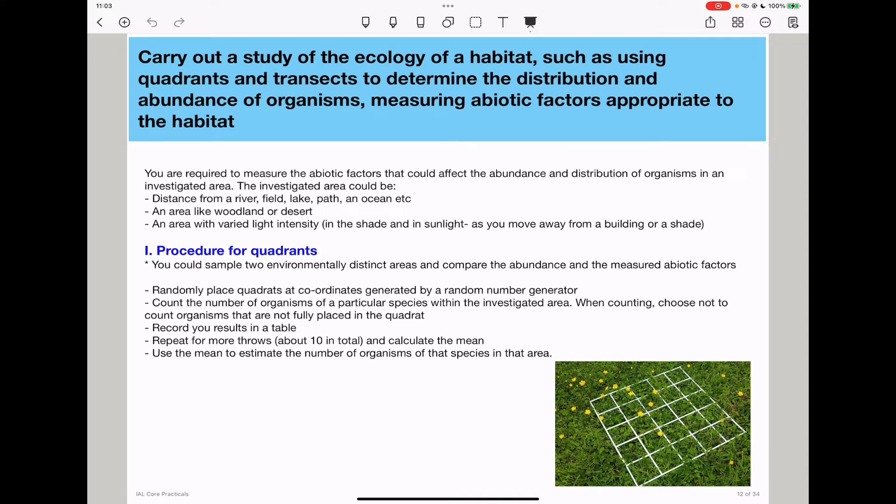When we use quadrats, you could sample two environmentally distinct areas and compare the abundance, then measure specific abiotic factors. You randomly place quadrats at coordinates generated by a random number generator and count the number of organisms of a particular species in the investigated area. Also, when counting, you have to choose which organisms you're going to count and which you're going to leave out. For example, in the image we see here, some organisms may be touching the quadrats but they're halfway in. You have to make a decision before the experiment whether those are going to be counted as being in or as being out.